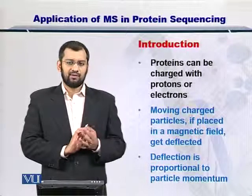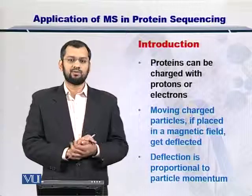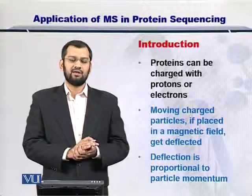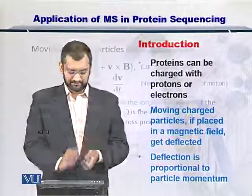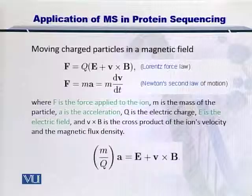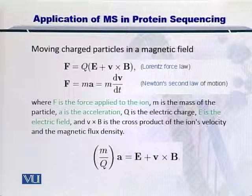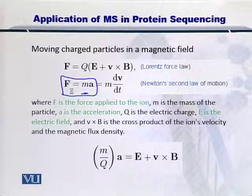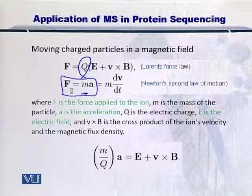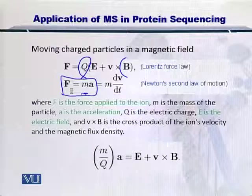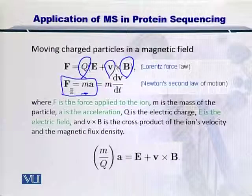The key principle is that the degree of deflection is proportional to the momentum, which is actually the product of the mass and velocity of the protein. The underlying physics comes from the Lorentz force and Newton's second law. Given these equations: F equals MA, where M is the mass of the protein or ion, Q is the charge that you have added onto the protein, B is the magnetic field placed around this moving protein, V is its velocity, and E is the electric field.